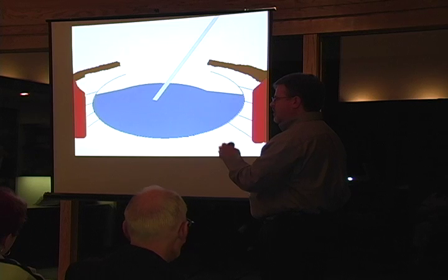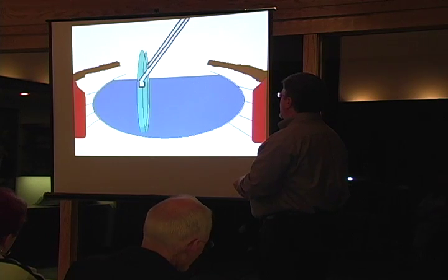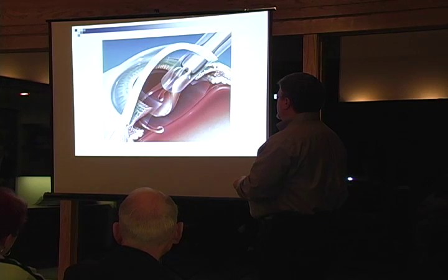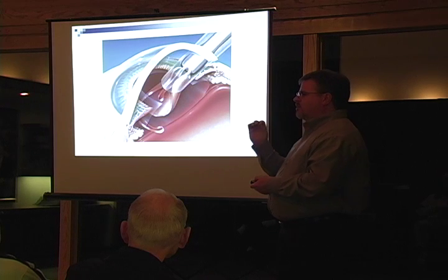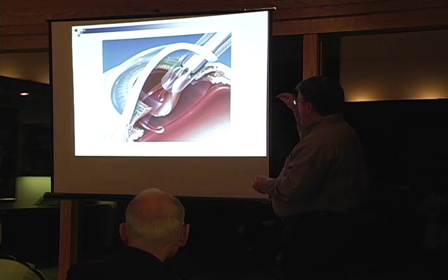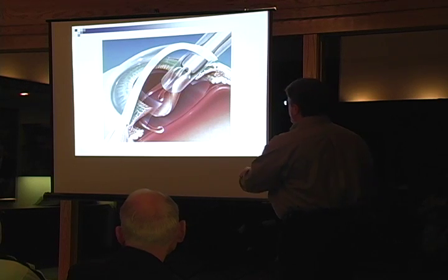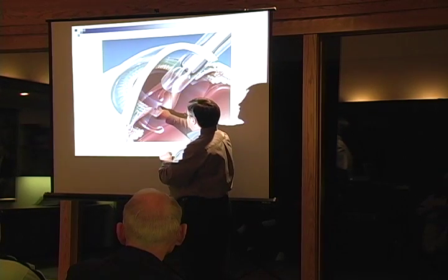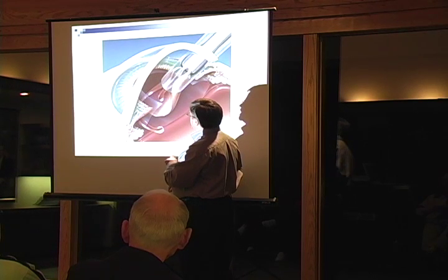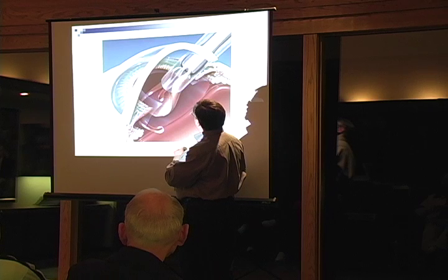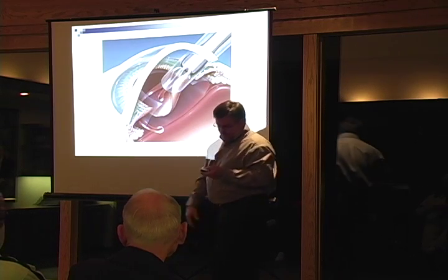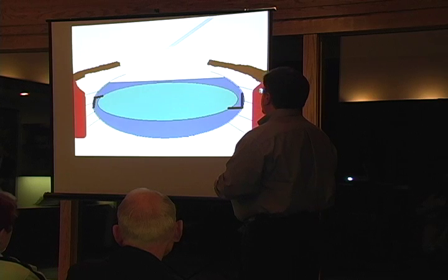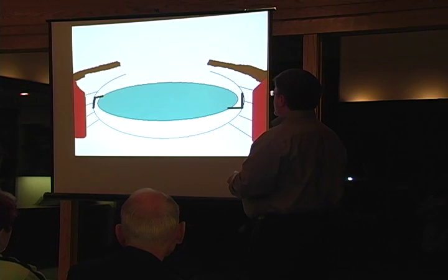Then we fill the capsule with a gel-like substance and put the lens in. This is how we insert the lens today — it goes in with a little injector. It's folded up — a hydrogel, essentially silicone lens — folded up like a burrito and slid into the eye. The capsule has been left in place all the way around, and the lens is placed inside and unfolds into position. Then we suck out all the gel substance, and there you go.